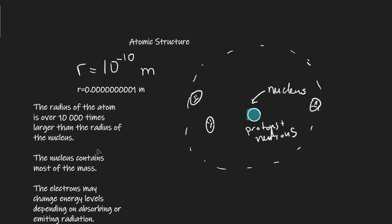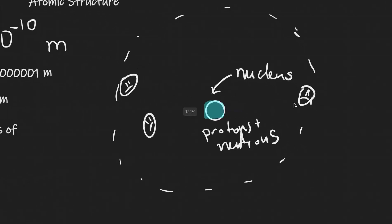Now the nucleus is tiny. The radius of the atom is over 10,000 times larger than the radius of the nucleus. So this means that this picture here is definitely not up to scale.